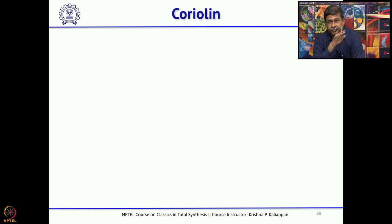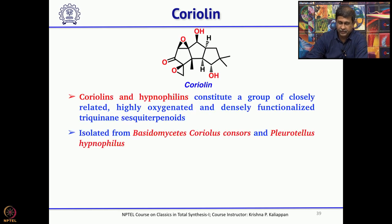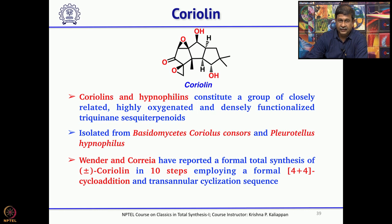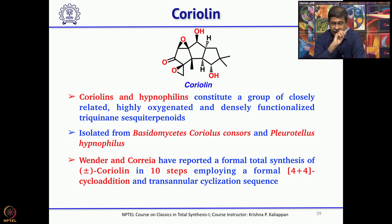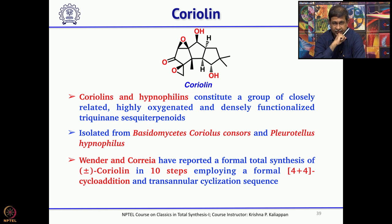I will now talk about one more total synthesis — the synthesis of coriolin, reported by Paul Wender's group. Interestingly, what he used is an extension of the method discussed previously, converting an 8-membered ring into two 5-membered rings. This 8-membered ring was made using a 4+4 cycloaddition — recall that 4+2 gives a 6-membered ring while 4+4 gives an 8-membered ring — and this 4+4 can be done under photochemical conditions.